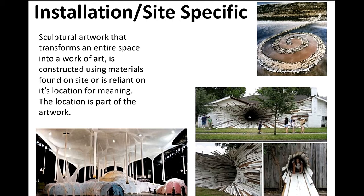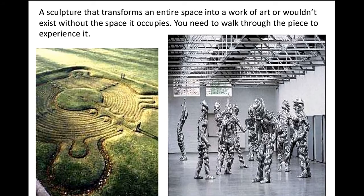Installation is another type of sculpture. A sculptural artwork that transforms an entire space into a work of art, it is constructed using materials found on site or is reliant on its location for meaning — the location is a part of the artwork. Installation sculpture would not exist without the space it occupies; you need to walk through the piece to experience it, just like here in the picture.